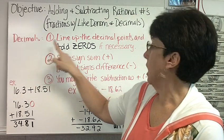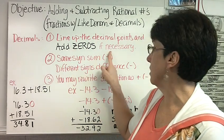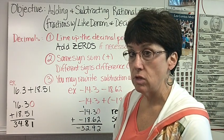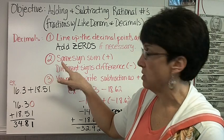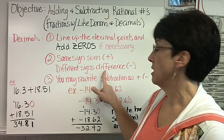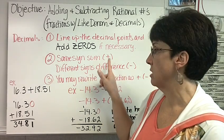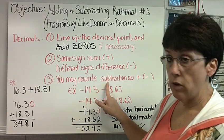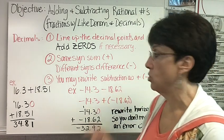Step 1, line up the decimal points and add zeros if necessary so that you have the same number of digits after each decimal point. Number 2, remember the rules: same sign sum, different signs take the difference. Difference is subtraction, sum is addition. And number 3, you may rewrite subtraction as adding the opposite any time you would like to.